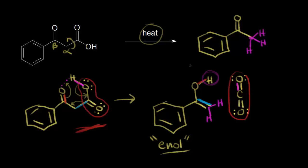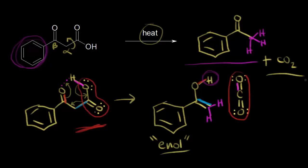This decarboxylation reaction produces a ketone, and it doesn't really matter what the R group is — here we have a benzene ring instead of the OH in the previous example. We're also going to make CO2. Decarboxylation reactions are going to be important in future videos where we're synthesizing some complicated molecules, and this is the cyclic mechanism for it.